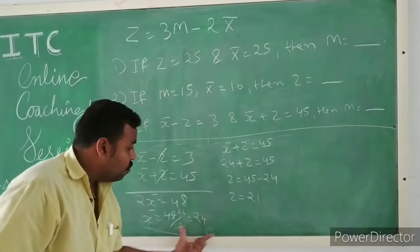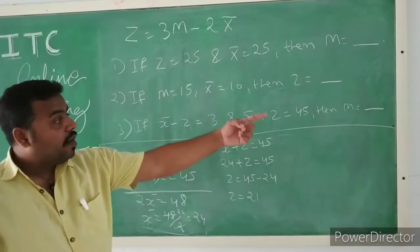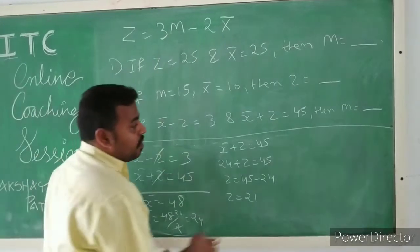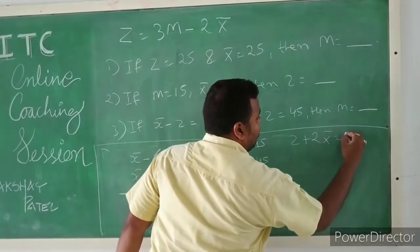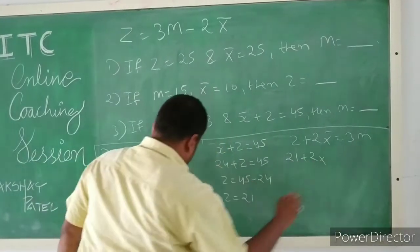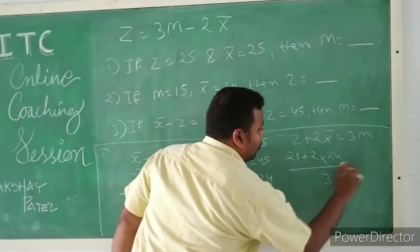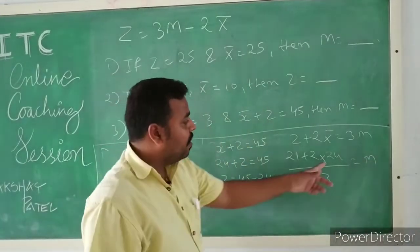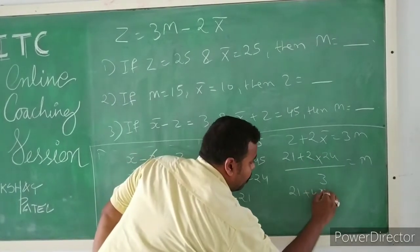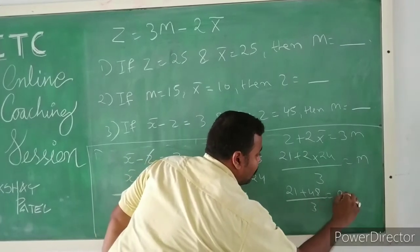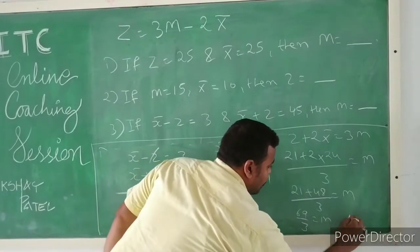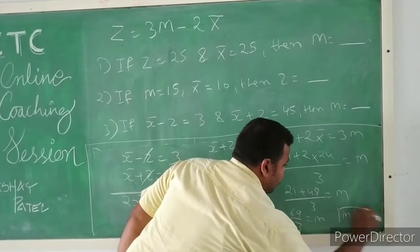Now we have the values of two parameters, Z = 21 and x̄ = 24, but we need to find M. Making M the subject: Z + 2x̄ = 3M. Substituting: 21 + 2×24 = 3M, so 21 + 48 = 69 = 3M, giving M = 23.